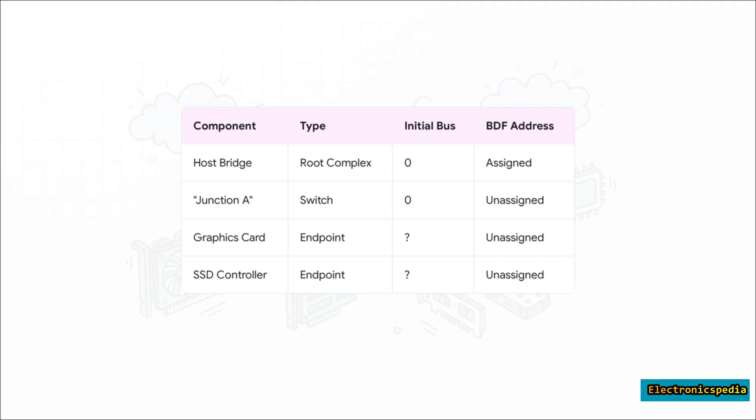Plugged into that is a switch—we'll just call it Junction A. And then hanging off of that switch we've got a graphics card and an SSD controller. This is the before picture. Nothing has an address, nothing has been discovered. It's a total mystery.